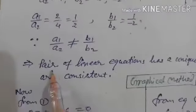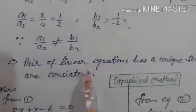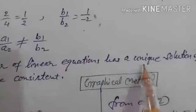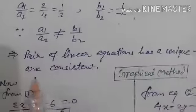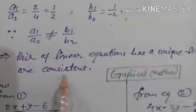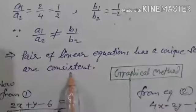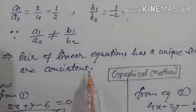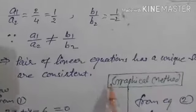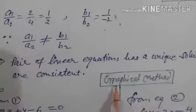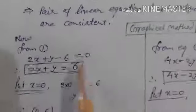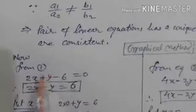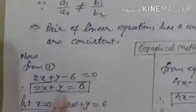So the pair of linear equations has a unique solution, and this type of pair of linear equations is called consistent. Since they are consistent, we will find the solution graphically. Let's see the graphical method, starting from equation number 1.